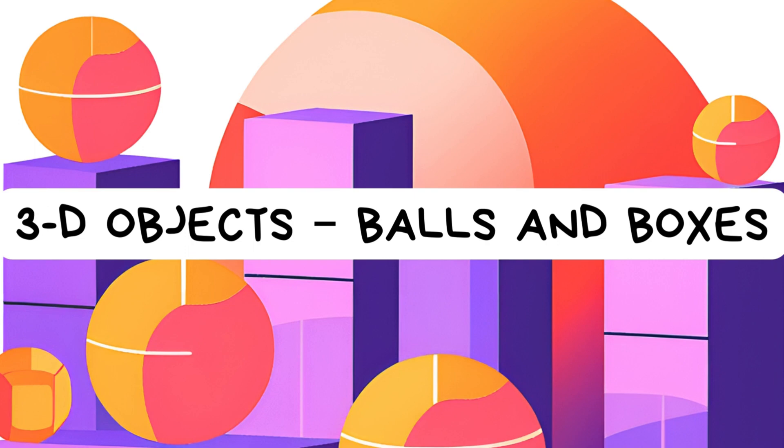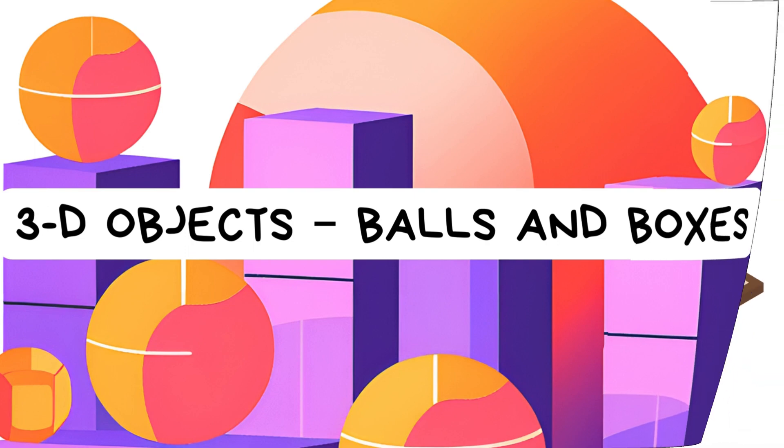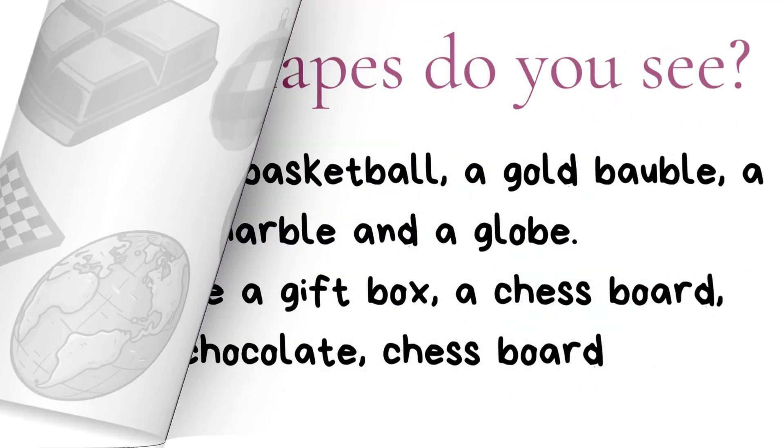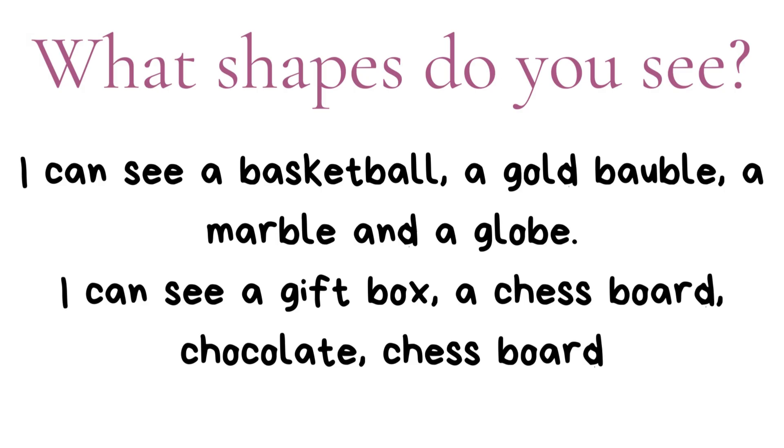3D Objects: Balls and Boxes. What shapes do you see? I can see a basketball, a gold bauble, a marble and a globe. I can see a gift box, a chessboard, and chocolate.